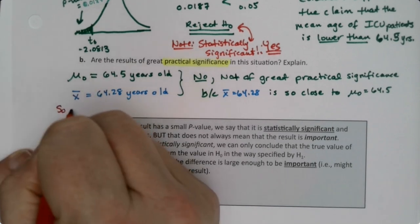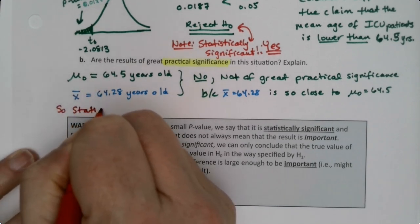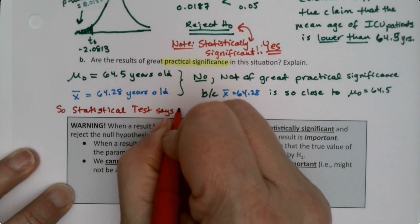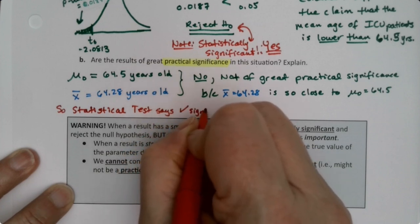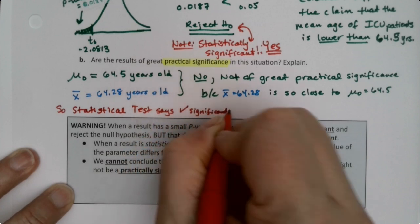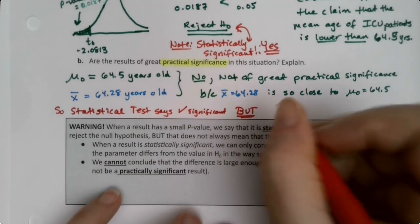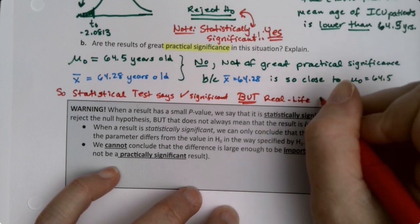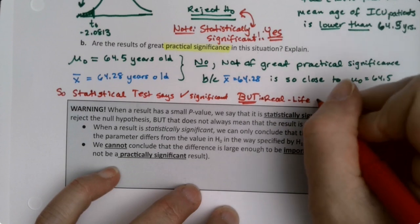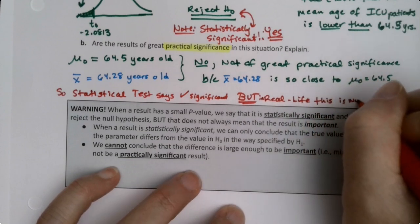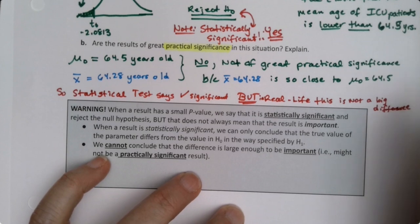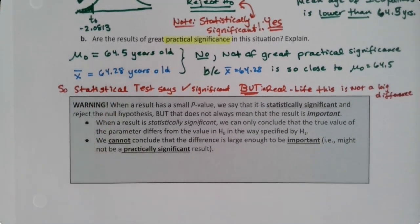The ICU is going to run how it always was. So the statistical test says significant, but in real life it's not a big difference. There's not a huge effect on the age of these patients — not a big difference at all.